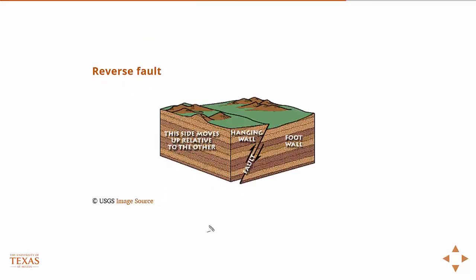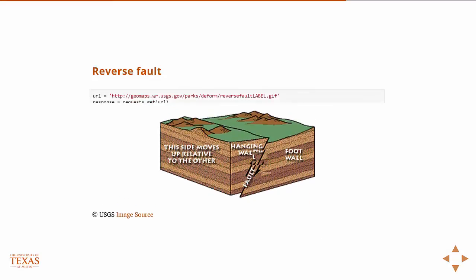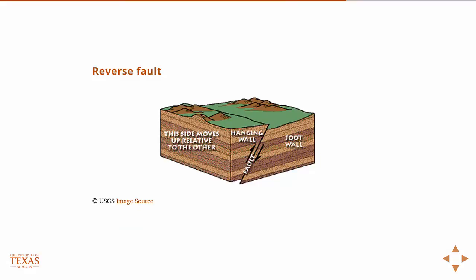The opposite of a normal fault is a reverse fault. Same idea. If this were floating in space and I fix the footwall and then I apply gravity, but I apply it in the reverse direction, which way is the hanging wall going to move? So if you can just remember that, right? Normal gravity, reverse gravity - which way is the hanging wall going to move under those conditions? And that's how you characterize the two faults.